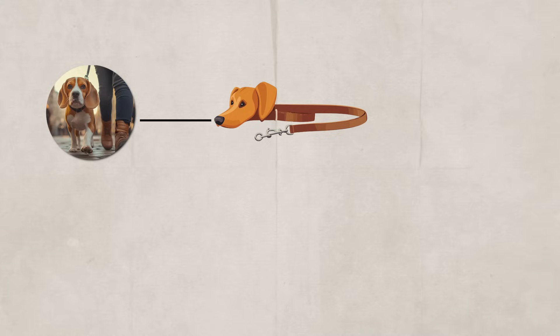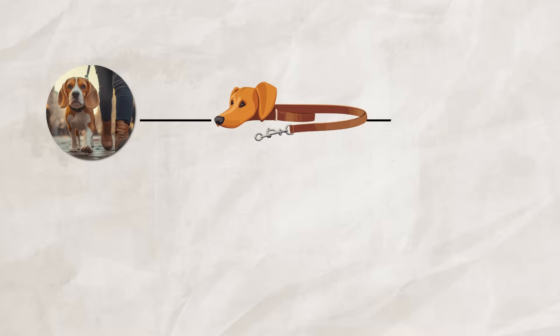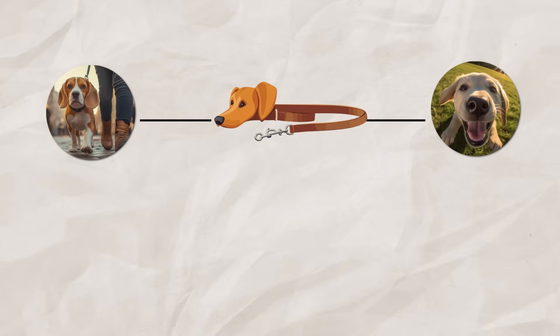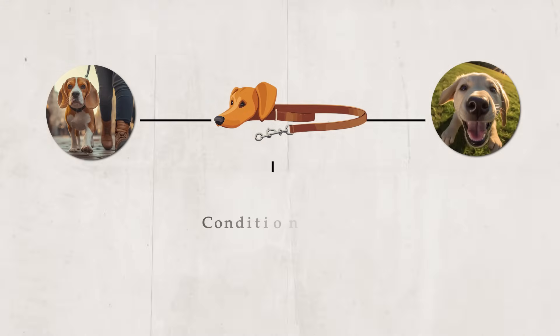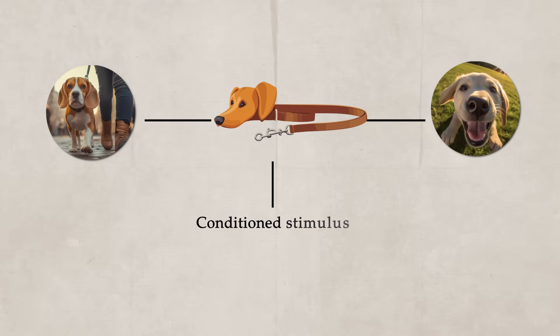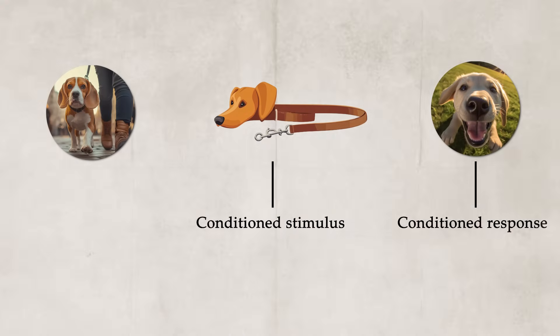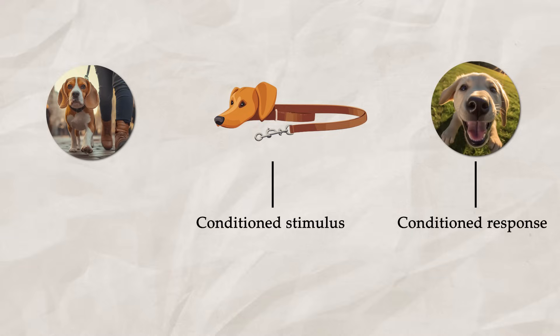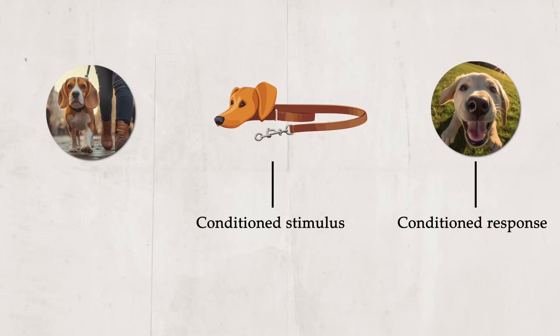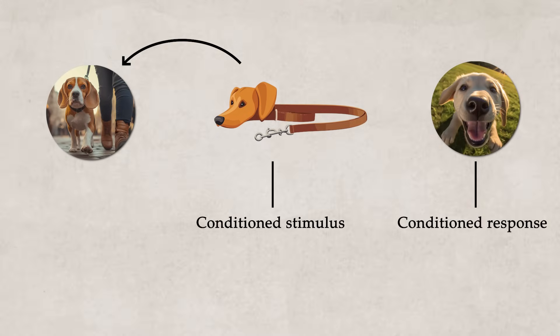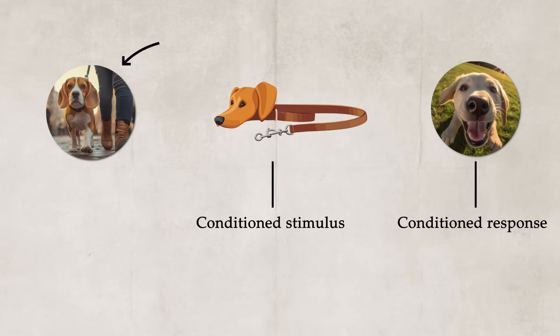For example, let's say that every time you're going to take your dog on a walk, you first go get the dog leash. Eventually, the dog sees the leash and gets excited, even though no walk occurs. In this example, the leash is the conditioned stimulus, and the conditioned response is the excitement. The leash used to mean nothing to the dog; however, now the dog associates the leash with a walk.